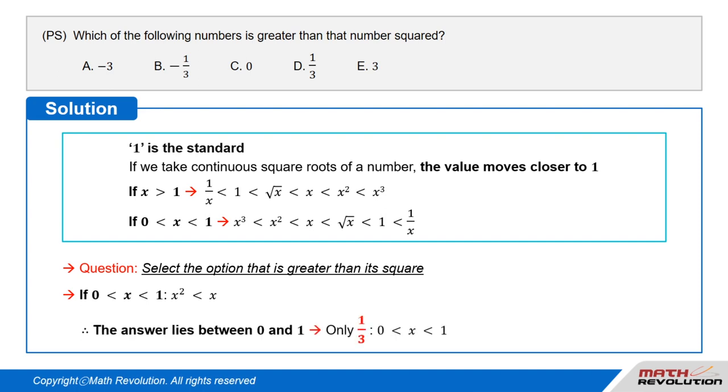So the option that lies between 0 and 1 will be our answer. Only 1 over 3 in the given choices lies in the range 0 is smaller than x, which is smaller than 1. Thus, d is the correct answer.